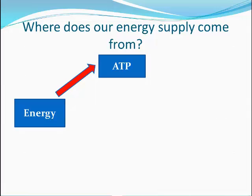ATP is a high energy compound that is found in your muscles. ATP is the only immediately usable source of energy in the body that we can use for muscular contractions. However, ATP does not last forever and it needs to be re-synthesised or rebuilt. It does this by three energy systems which we'll look at in more detail in the weeks to come.